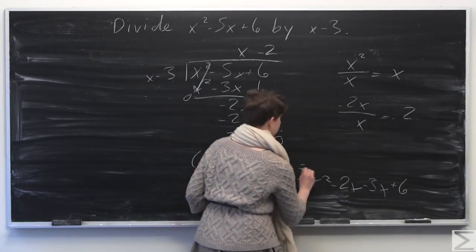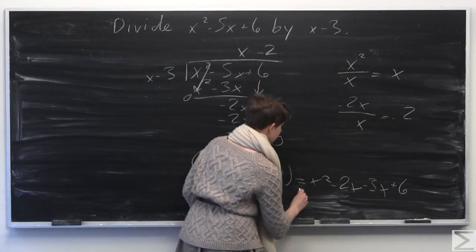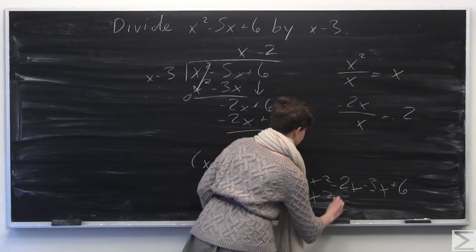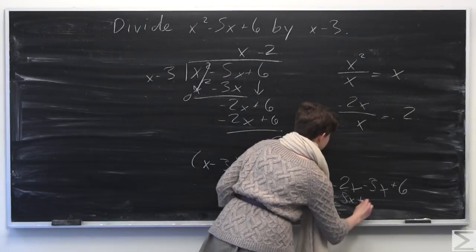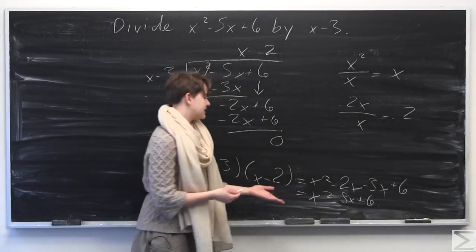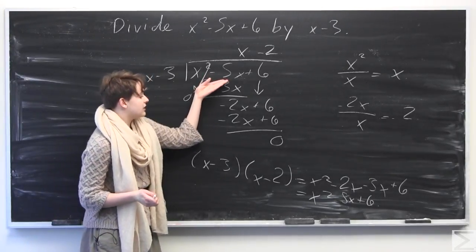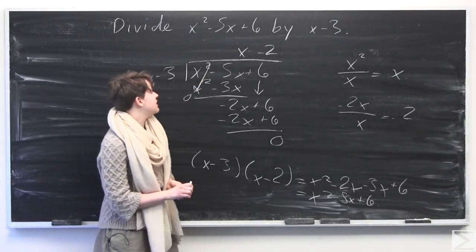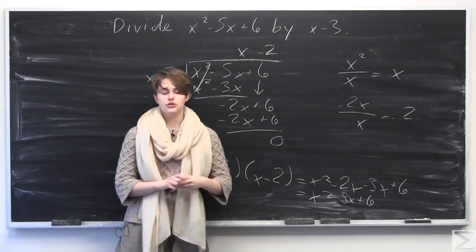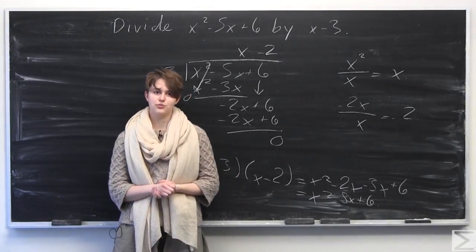This equals our original expression, x squared minus 5x plus 6. We have correctly executed our polynomial long division because we ended with our original expression. That's the method you would use for a polynomial long division problem.